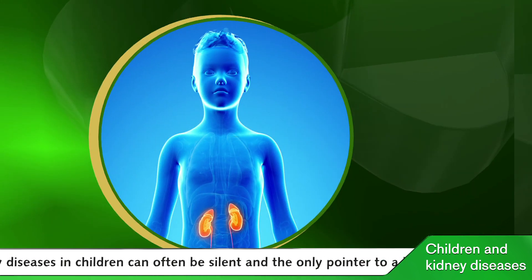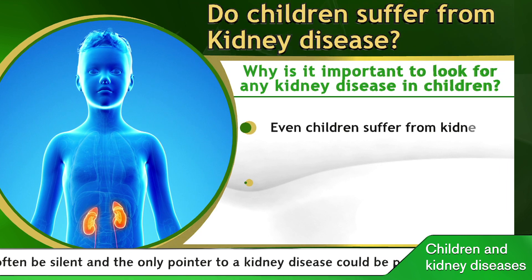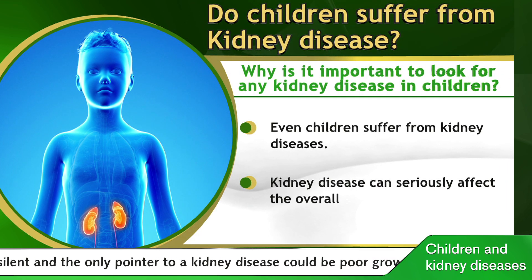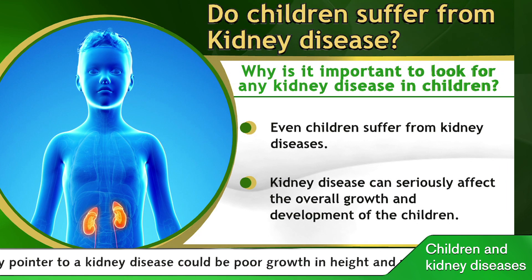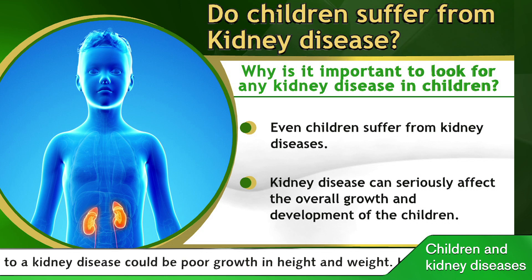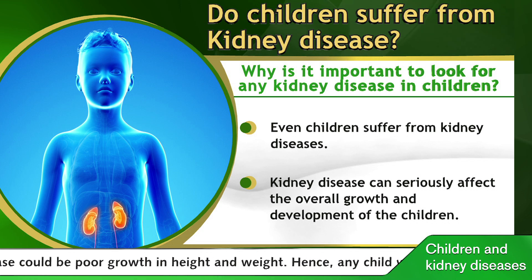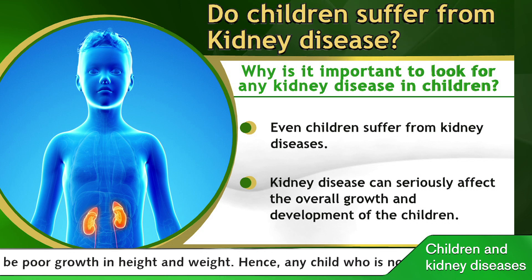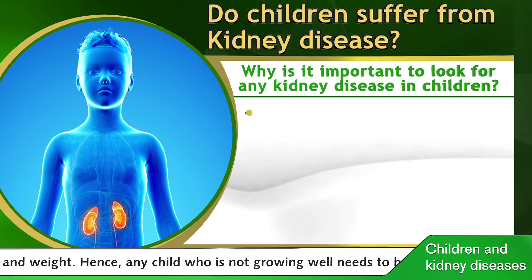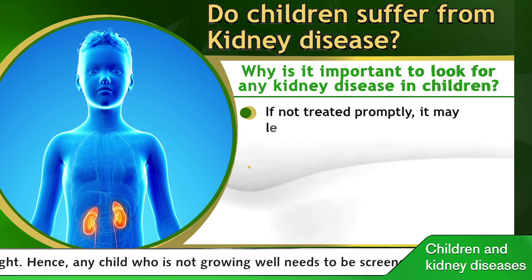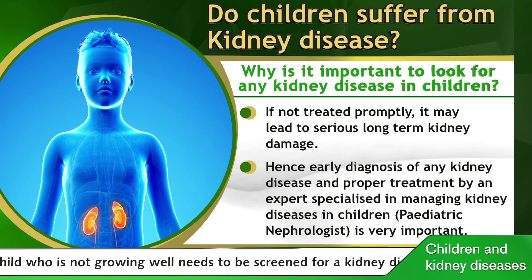How do we suspect that a child is having a kidney problem? Many children with kidney diseases can have a completely asymptomatic presentation with no signs of kidney disease. The child might just come with poor growth — not growing well when we record height and weight — and may also have abnormal blood pressure.